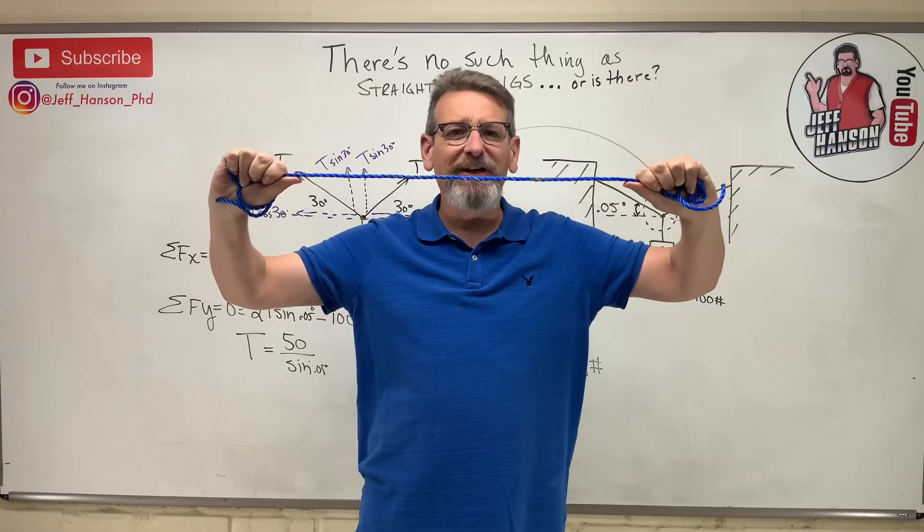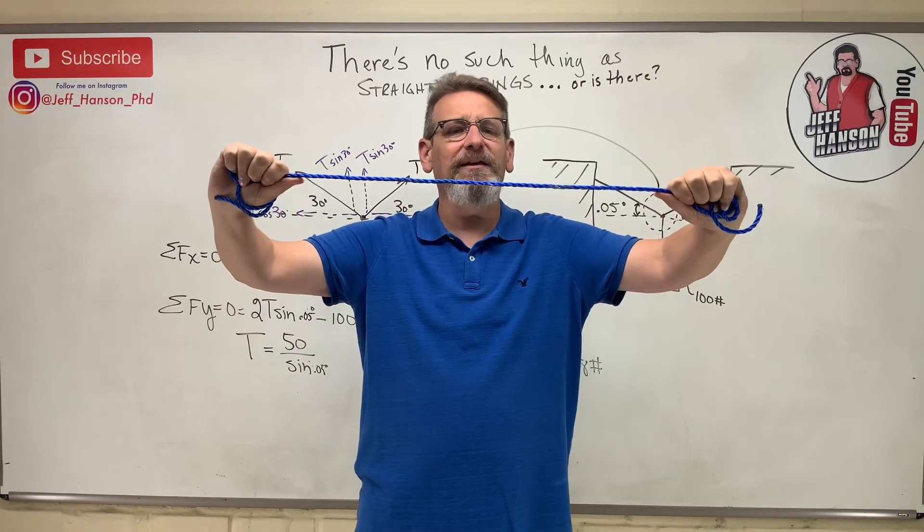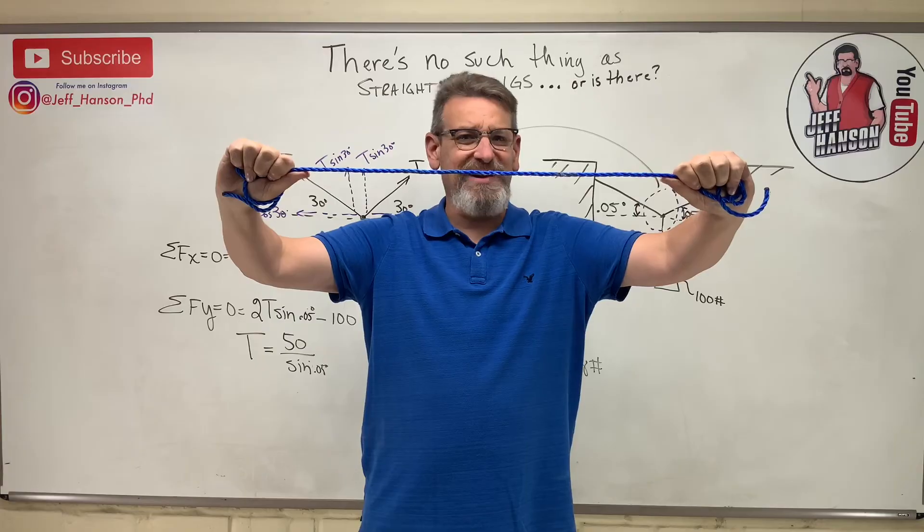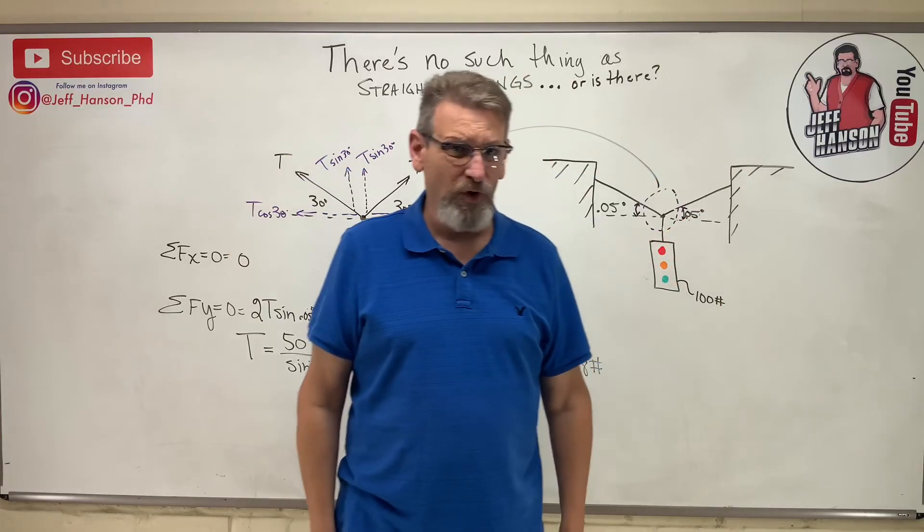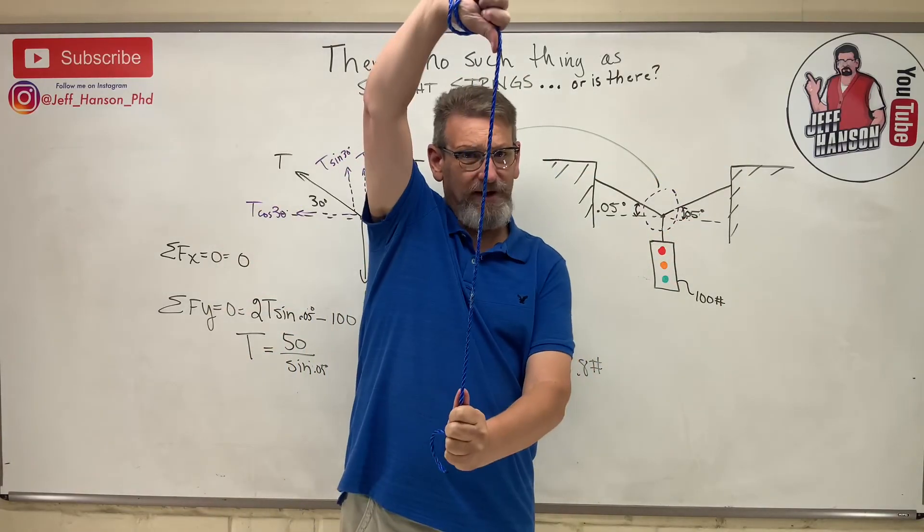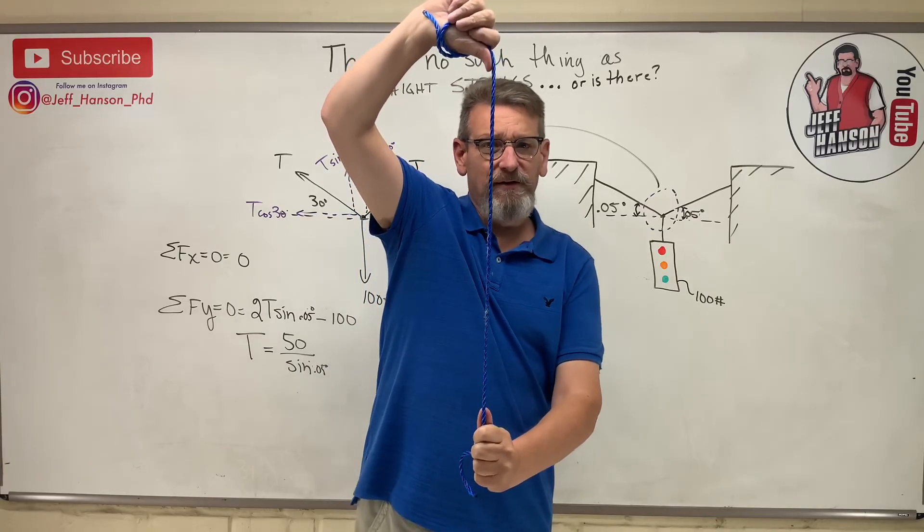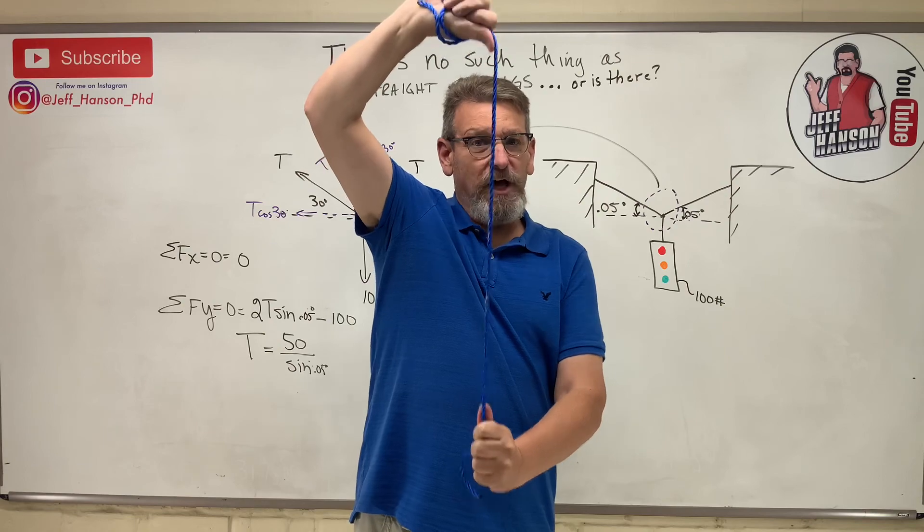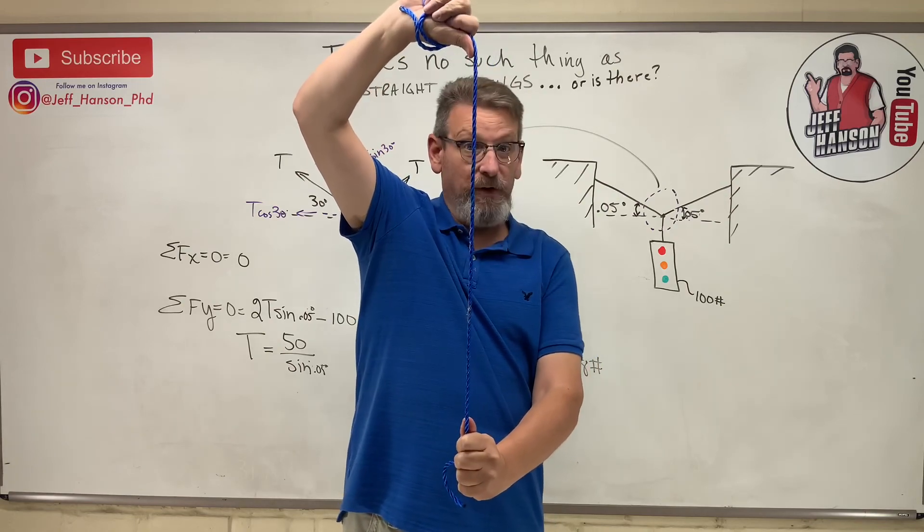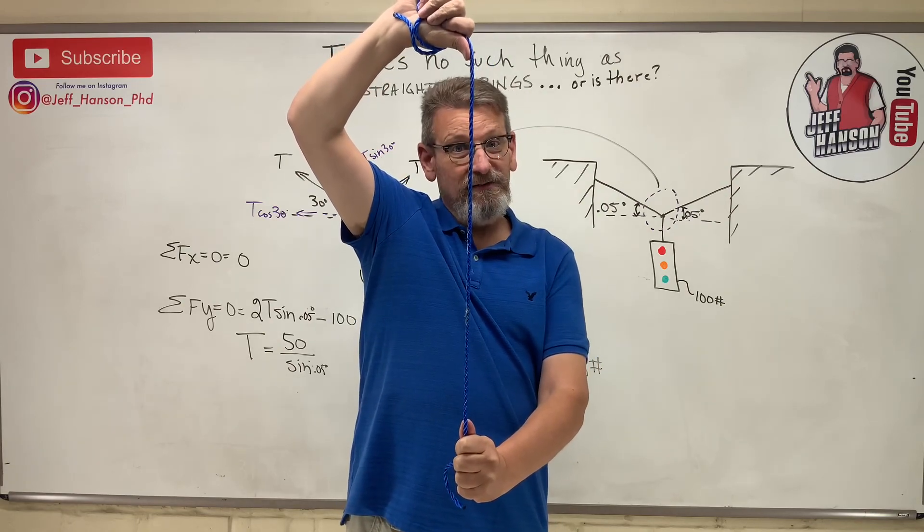What about now? What is this hand up here doing, my top hand? This top hand is pulling up as hard as the bottom hand is pulling down plus the weight of the rope, because it's also supporting the rope as well.